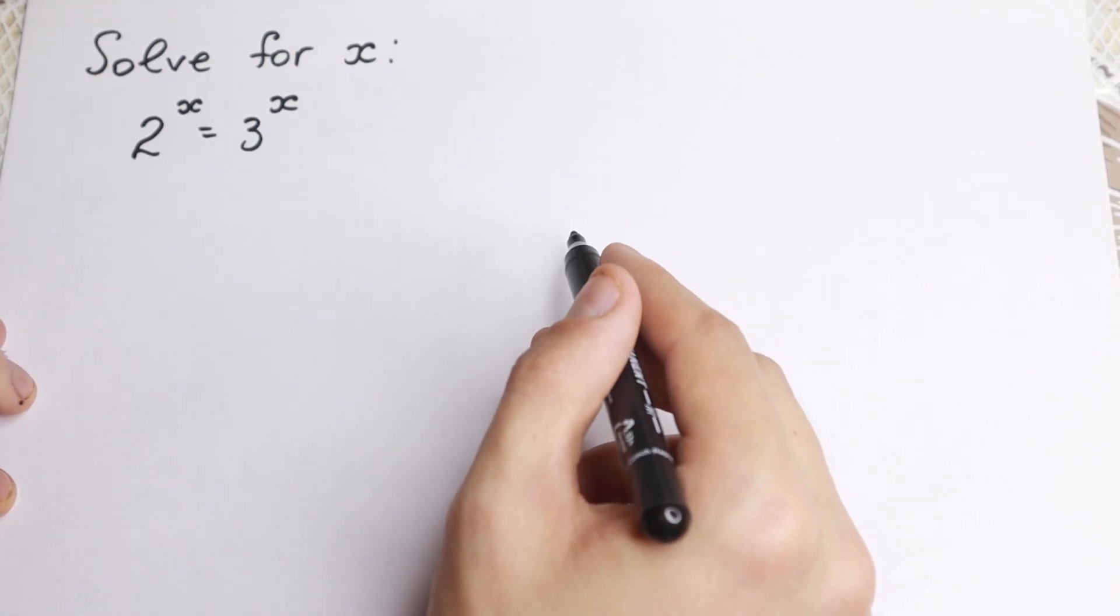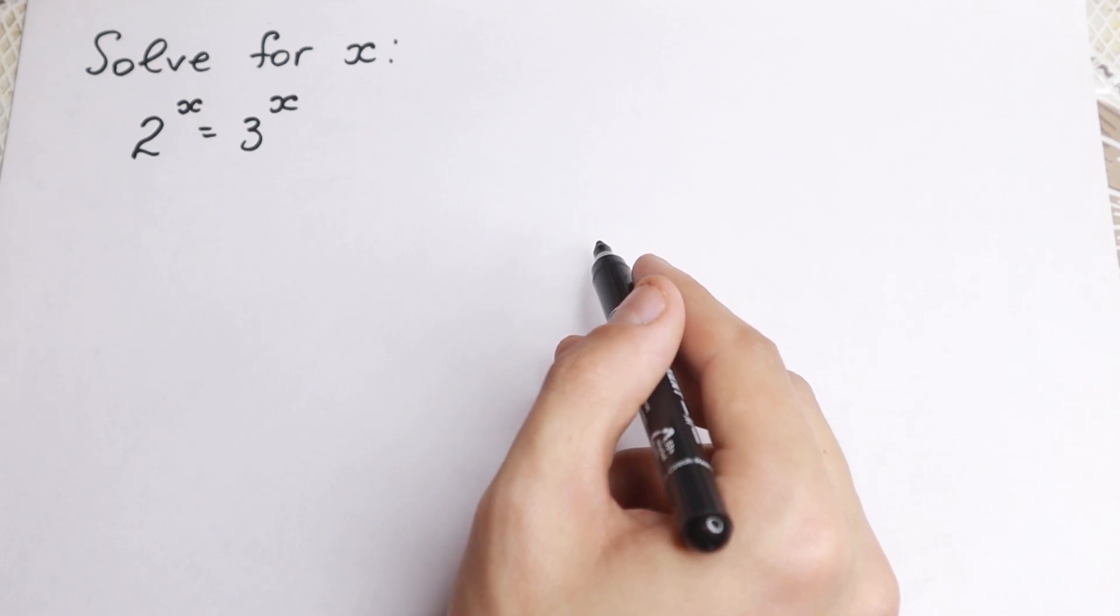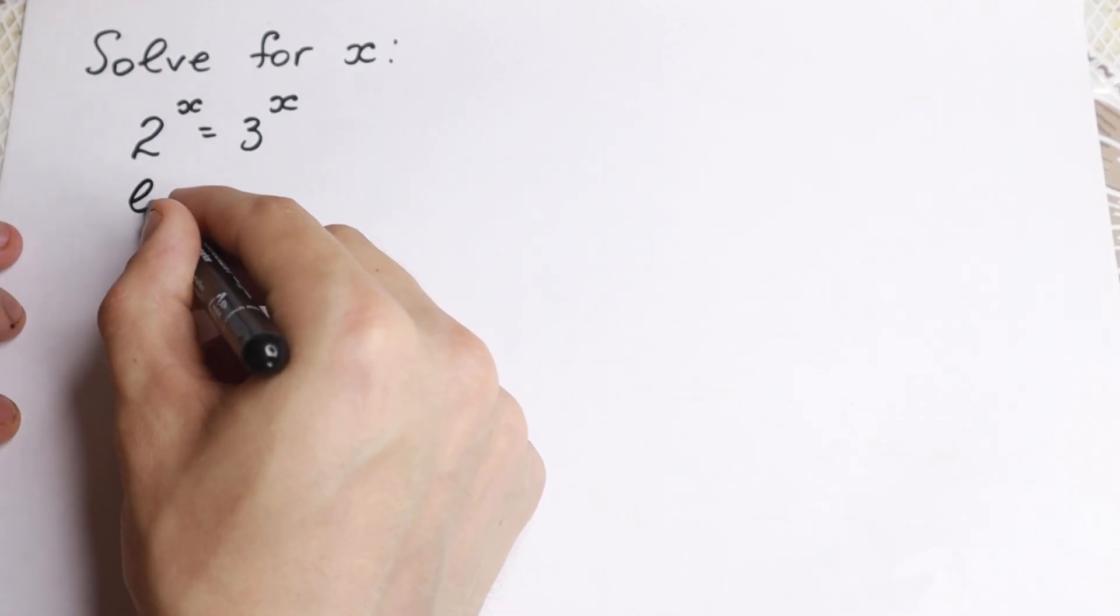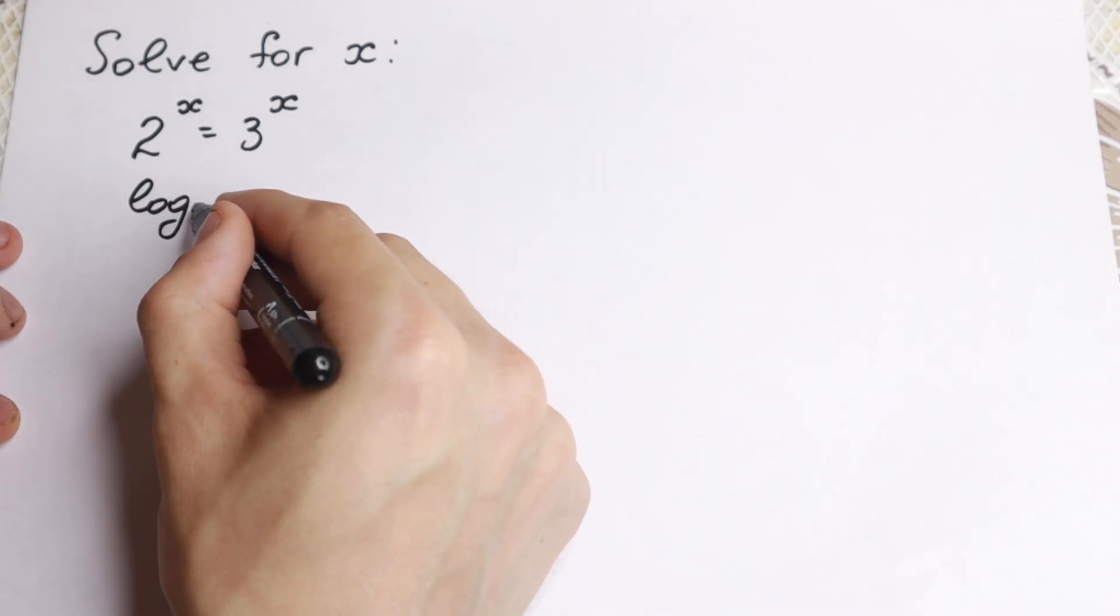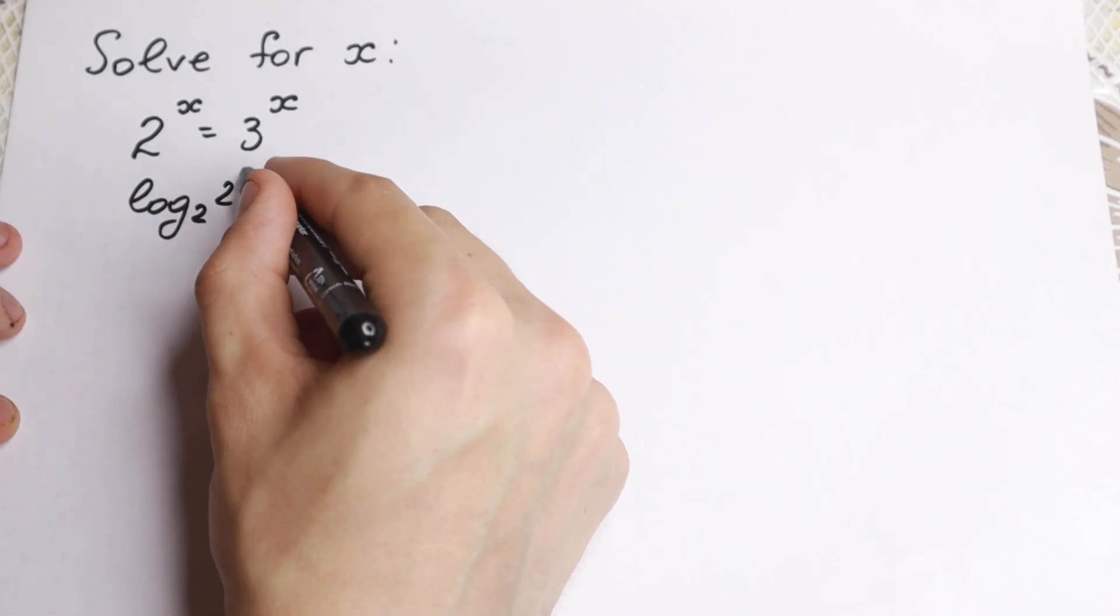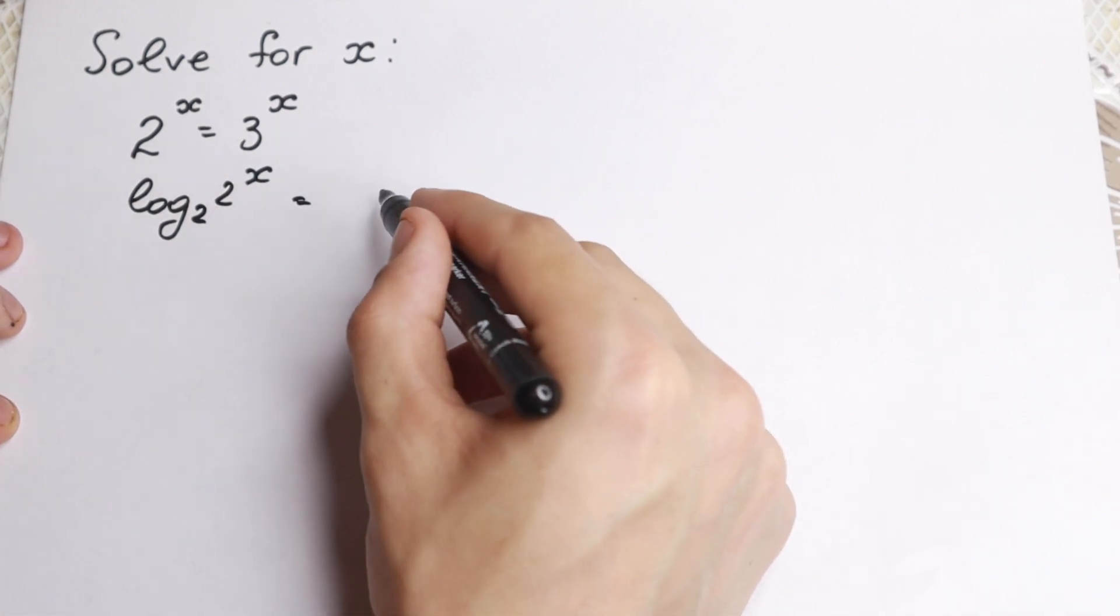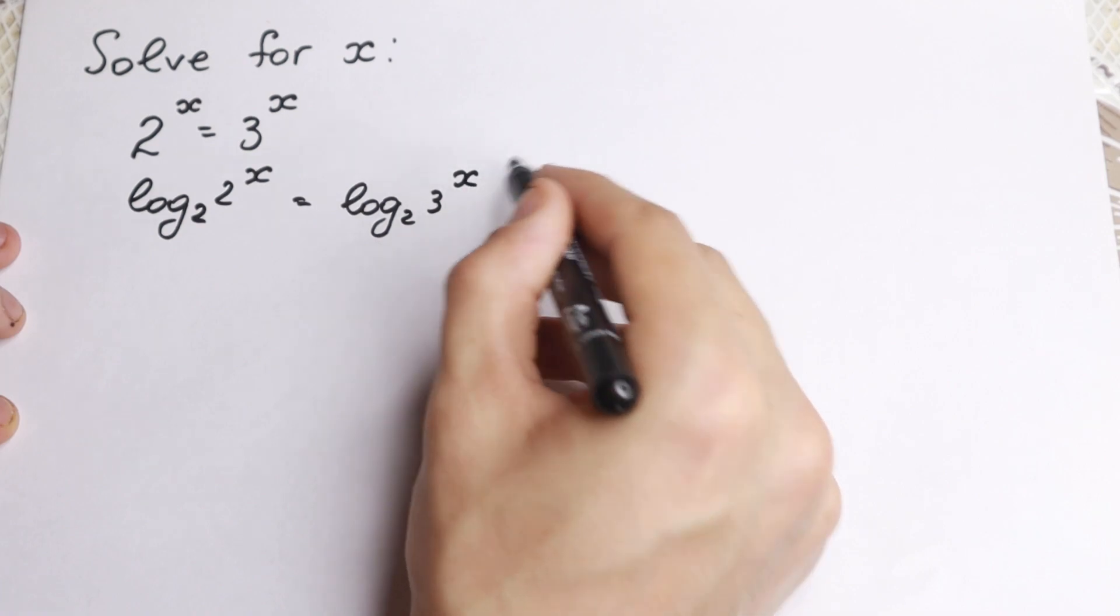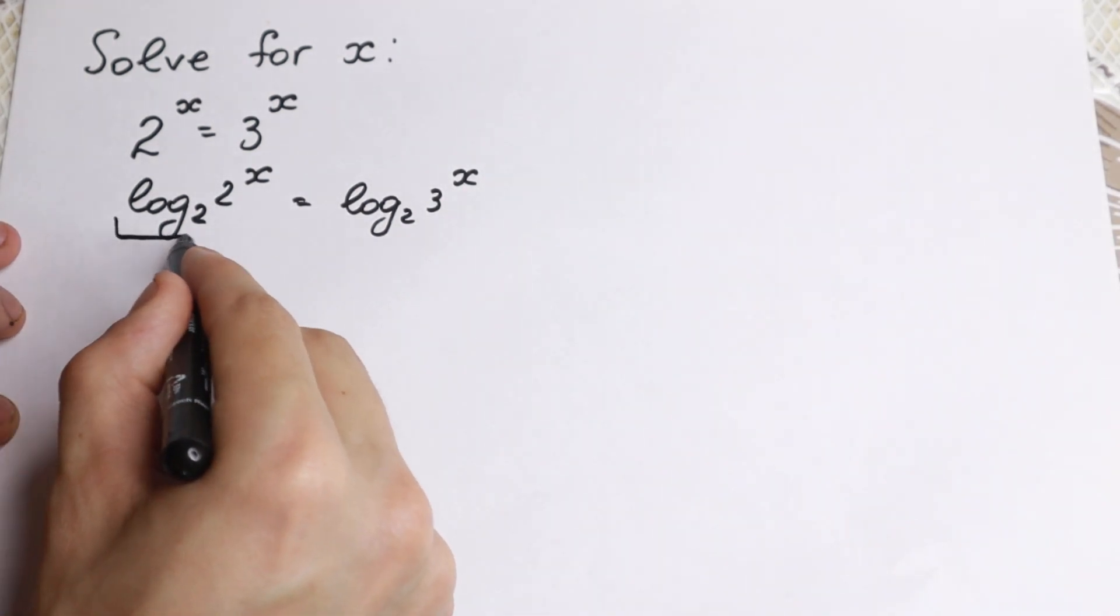Okay, 2 to the x equal to 3 to the x. Let's try to solve it. If you take log on both sides, let's take base of 2. So log base of 2 of 2 to the x, and right here we have log base of 2 of 3 to the x. We just take log on both sides, the same log, so we change nothing.